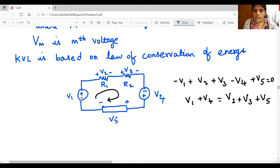This is, you are going from minus to plus, this is voltage rise. Plus to minus, voltage drop. Here, plus to minus, voltage drop. Minus to plus, voltage rise. Plus to minus, voltage drop. So you can also write sum of voltage rise is equal to sum of voltage drops.